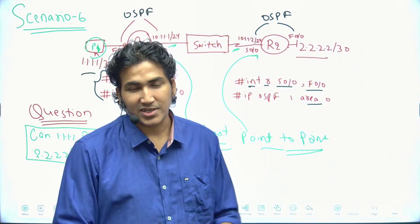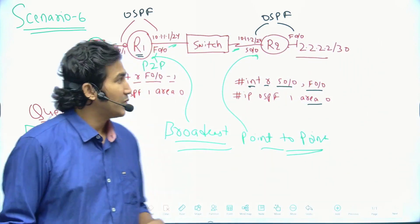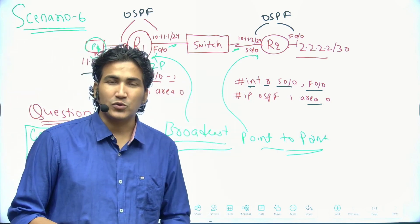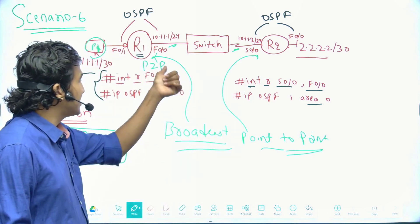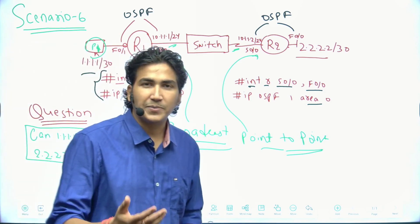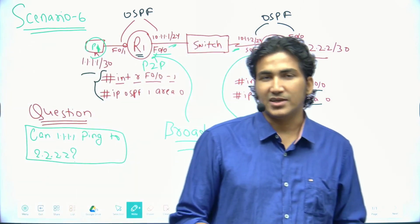And also the answer is clear to you. Why by default these two PCs are not able to communicate, and after changing the network type to point-to-point over here on router number one, how PCs can communicate with each other, right?